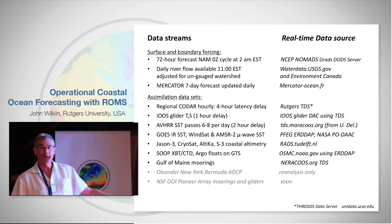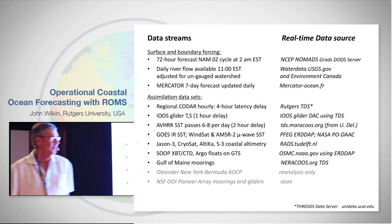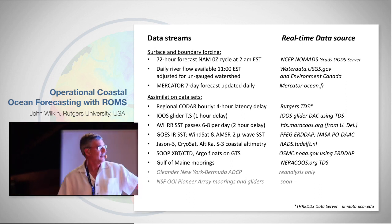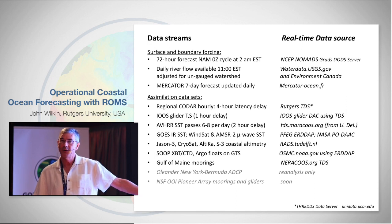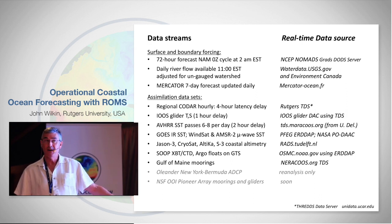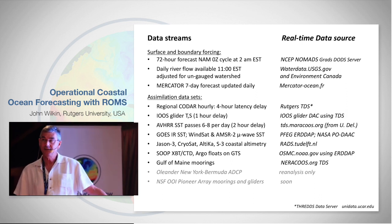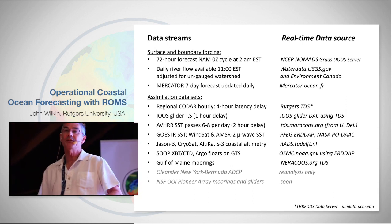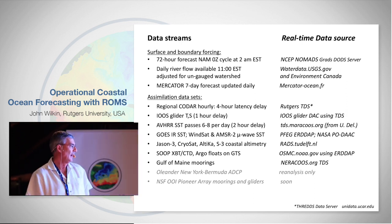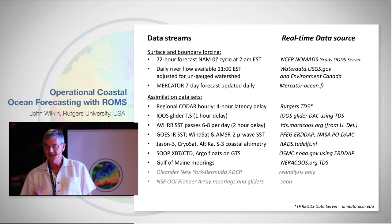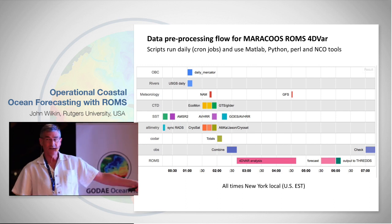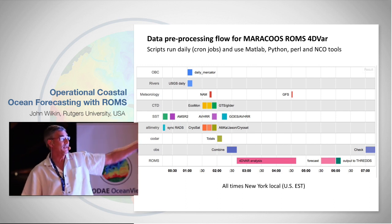If there's an altimeter satellite on orbit, we use it, pulling data from the Radar Altimeter Database System (RADS). Anything transmitted to the Global Telecommunications System — XBTs on ships of opportunity, CTDs, Argo floats, surface drifters — we get. We've tried to get all the data we possibly can. This whole system runs every night via cron jobs.